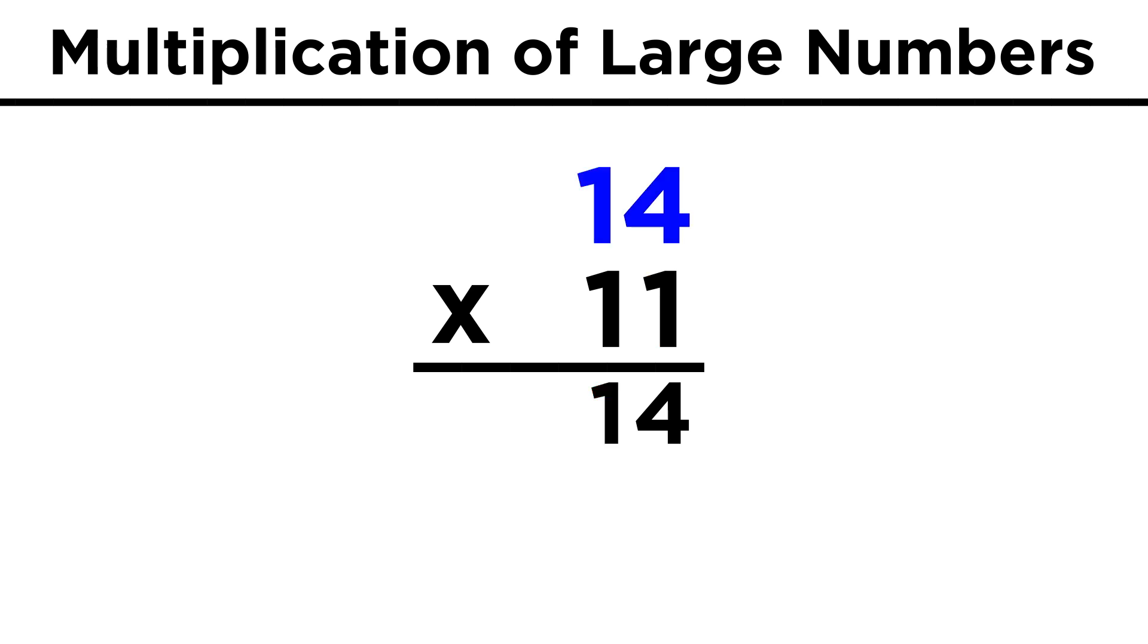Now we are going to multiply all the digits in the top number by the next digit to the left in the bottom number. Because this is the tens place and not the units place, we place a zero in the next row down for the units place, so that we can begin writing numbers in the tens place right away. Again, four times one is four, but the one represents ten, so we are really getting forty, which is why the four goes in the tens place. Then one times one is one, but both of these ones represent ten, so we are really getting one hundred, which is why the one goes in the hundreds place. We add these two rows together, and we get one hundred fifty-four.